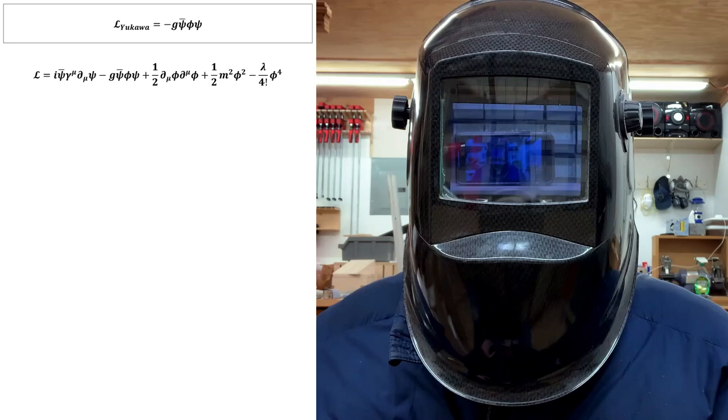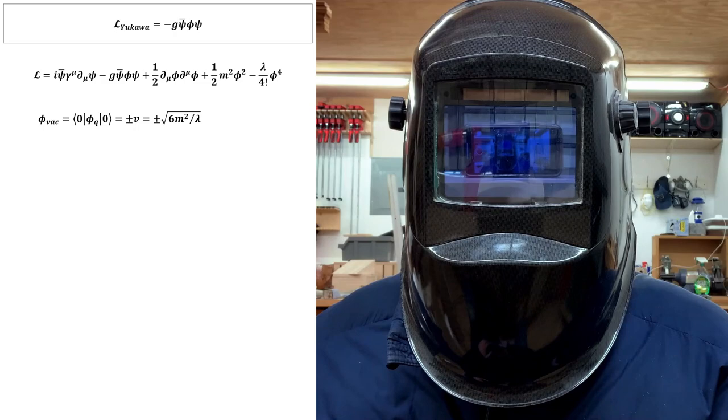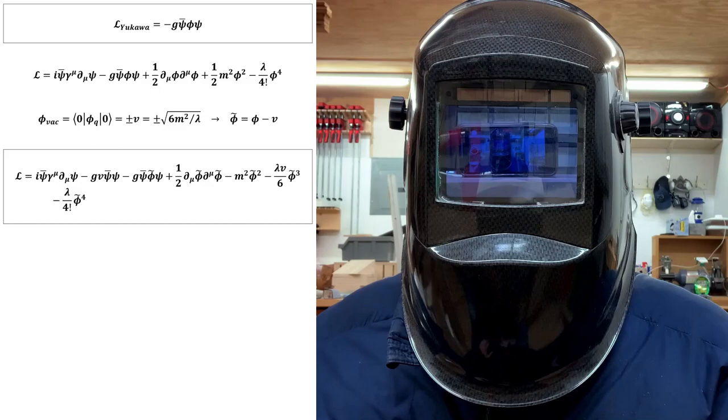The scalar field in the above Lagrangian develops a non-zero vacuum expectation value at low energy. Therefore, to get a physical theory at low energy, we must expand around a new vacuum. Inserting this and simplifying gives this Lagrangian. You can see that the sign on the scalar mass term is no longer tachyonic and we've acquired a fermion mass term.